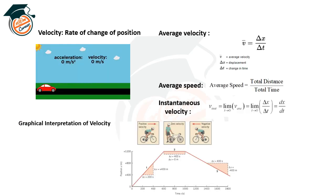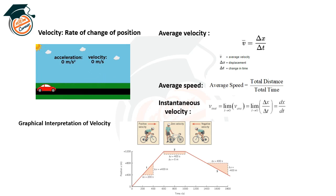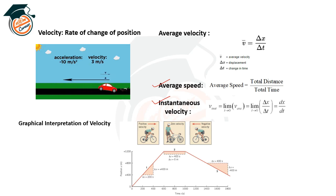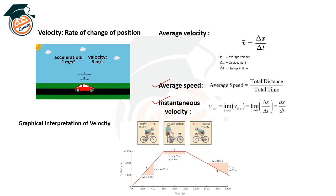Velocity is the rate of change of position. Average velocity is given by Δx / Δt, where Δx is displacement and Δt is change in time. Average speed equals total distance divided by total time. Instantaneous velocity is the limit of Δx/Δt, or the first-order derivative of displacement with respect to time. Graphically: increasing slope means positive velocity; zero slope means zero velocity (body at rest); downward motion gives negative velocity.